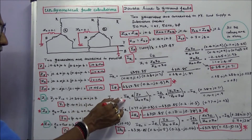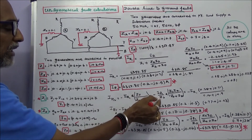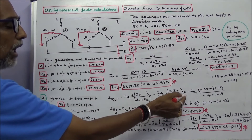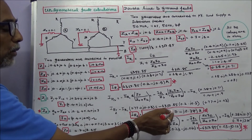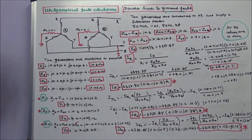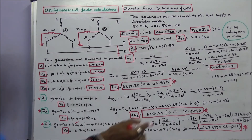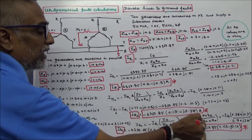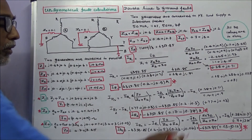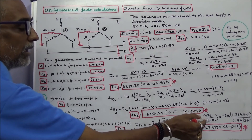IR2 equals minus IR1 times Z0 divided by Z0 plus Z2. Rewriting, IR2 equals minus IR1 divided by Z2 times Z0, times Z2 divided by Z0 plus Z2. Using the known value 0.28 plus J0.71 and substituting, IR2 equals minus 6350.85 times (0.17 minus J0.35). Similarly, IR0 equals minus IR1 times Z2 divided by Z0 plus Z2, giving IR0 equals minus 6350.85 times (0.03 minus J0.12).